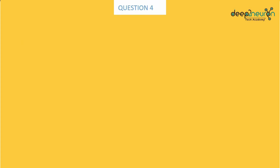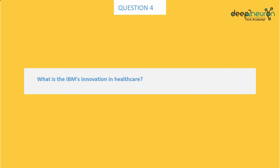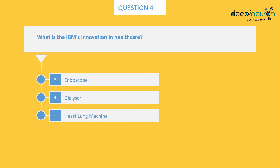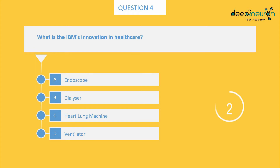Question number 4: What is IBM's innovation in healthcare? Option A: Endoscope. Option B: Dialyzer. Option C: Heart Lung Machine. Option D: Ventilator. The right answer is Option C, Heart Lung Machine.